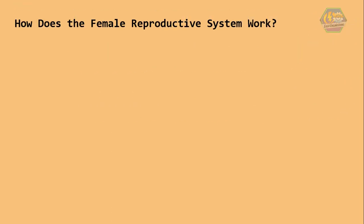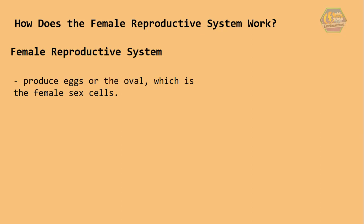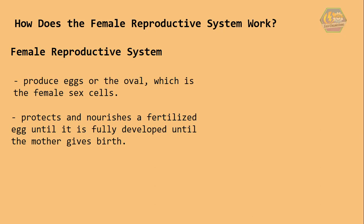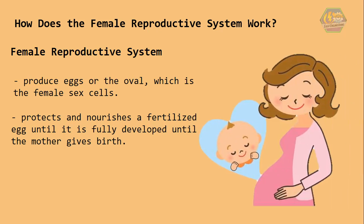How does the female reproductive system work? Other than coitus or sexual intercourse, the female reproductive system produces eggs, or the ova, which are the female sex cells. It also protects and nourishes a fertilized egg until it is fully developed and until the mother gives birth. Mothers should always be careful with their babies since not all pregnancies are successful.